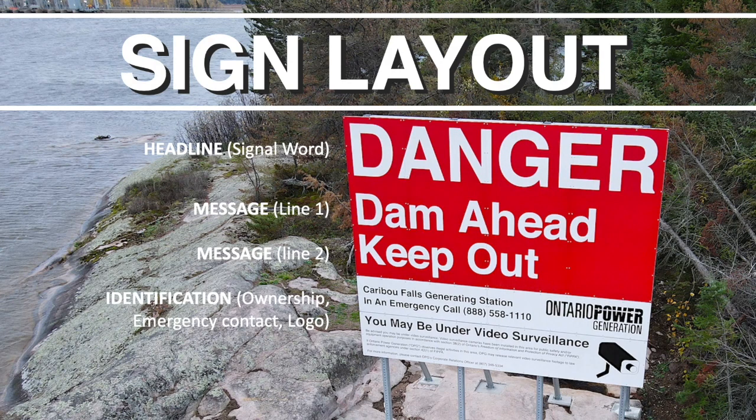Here's an example of a perfect public safety around-dam sign. We're going to deconstruct this sign and take a look at the original elements — color, headline, message text, and bottom panels — and dive a little deeper onto each of those elements to give you an understanding of why they are important.